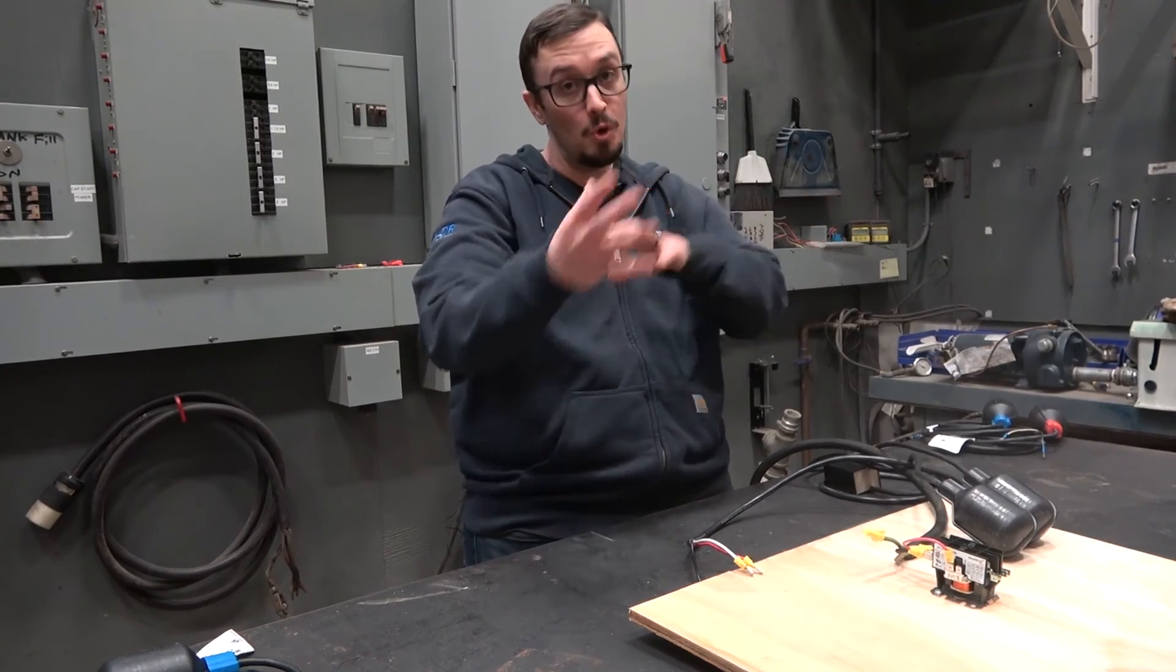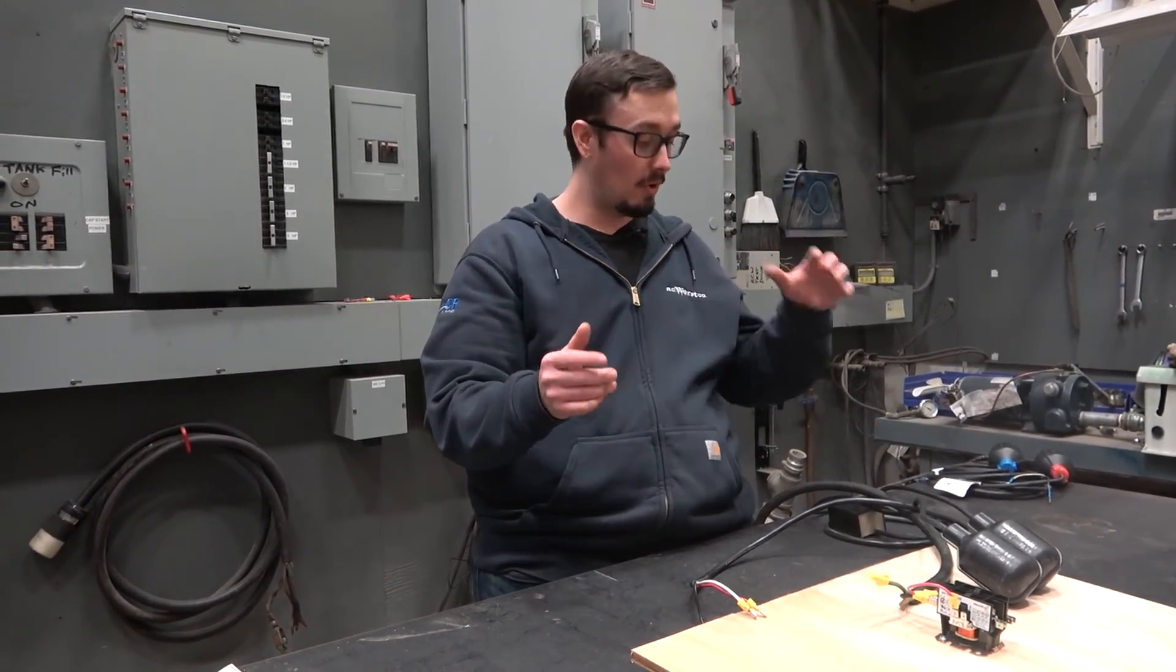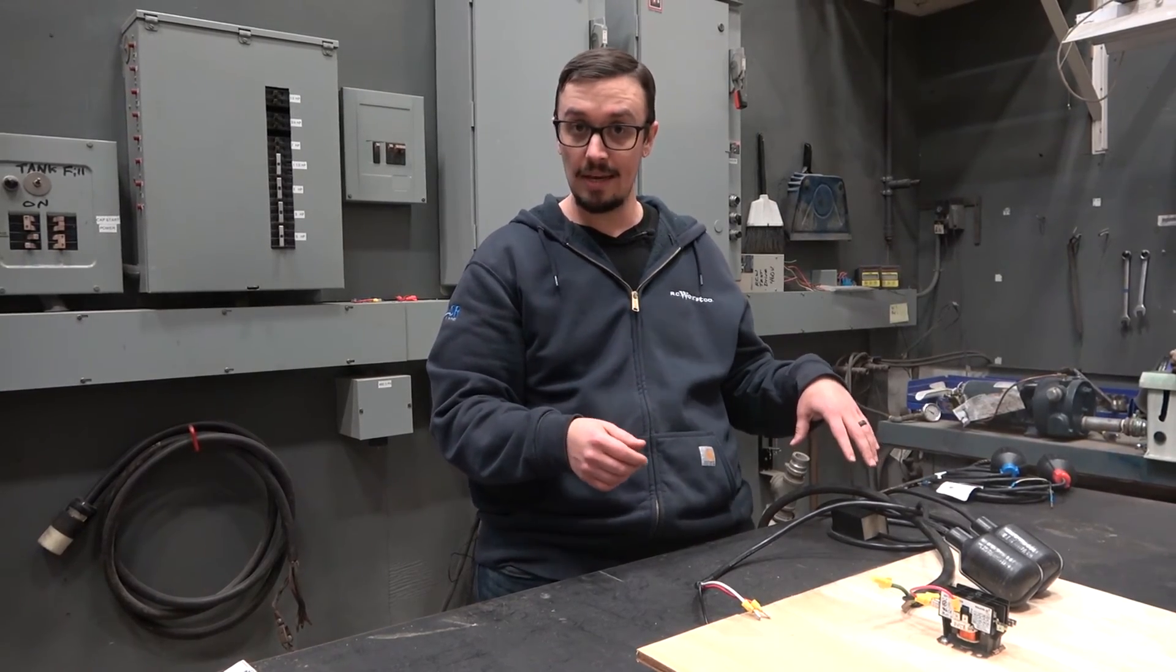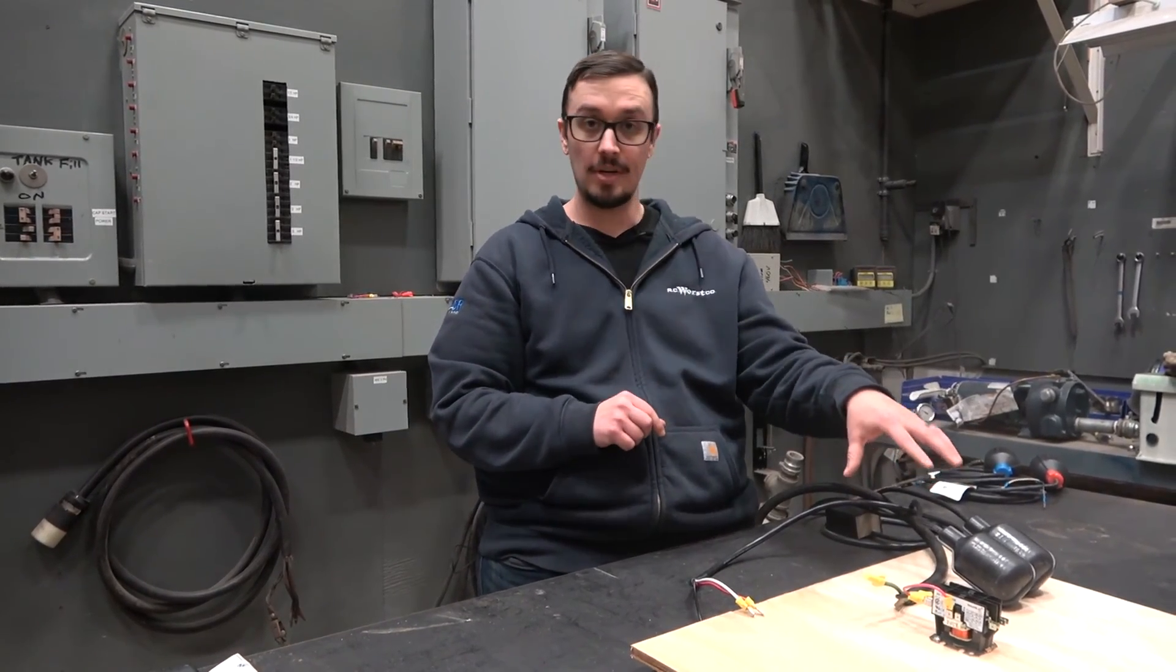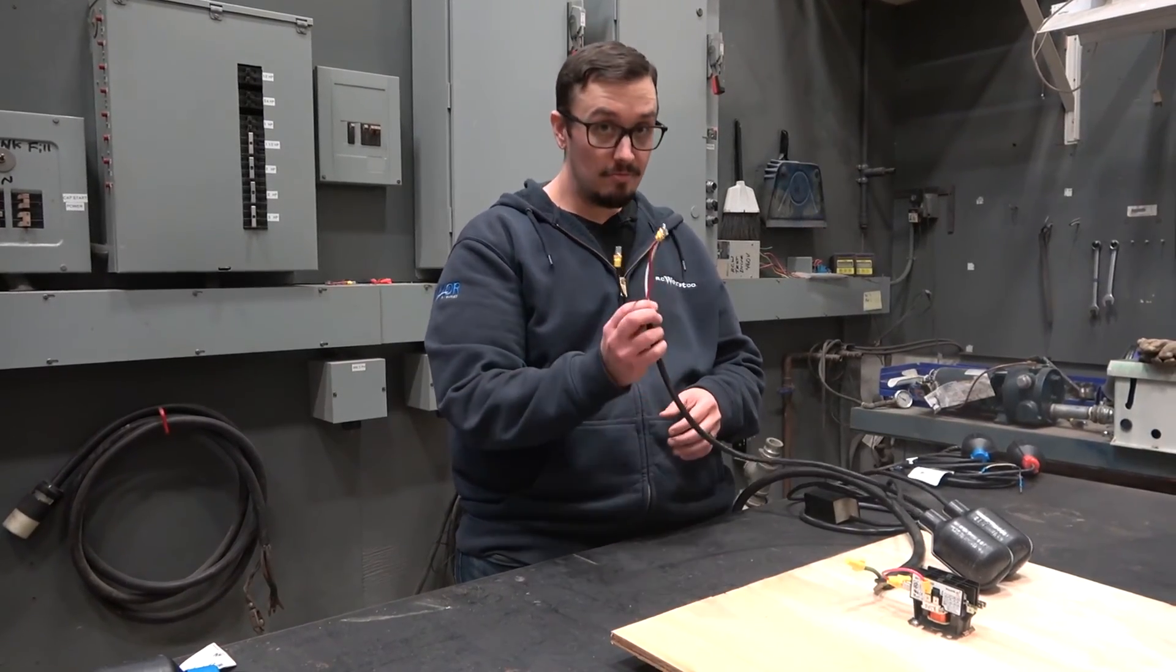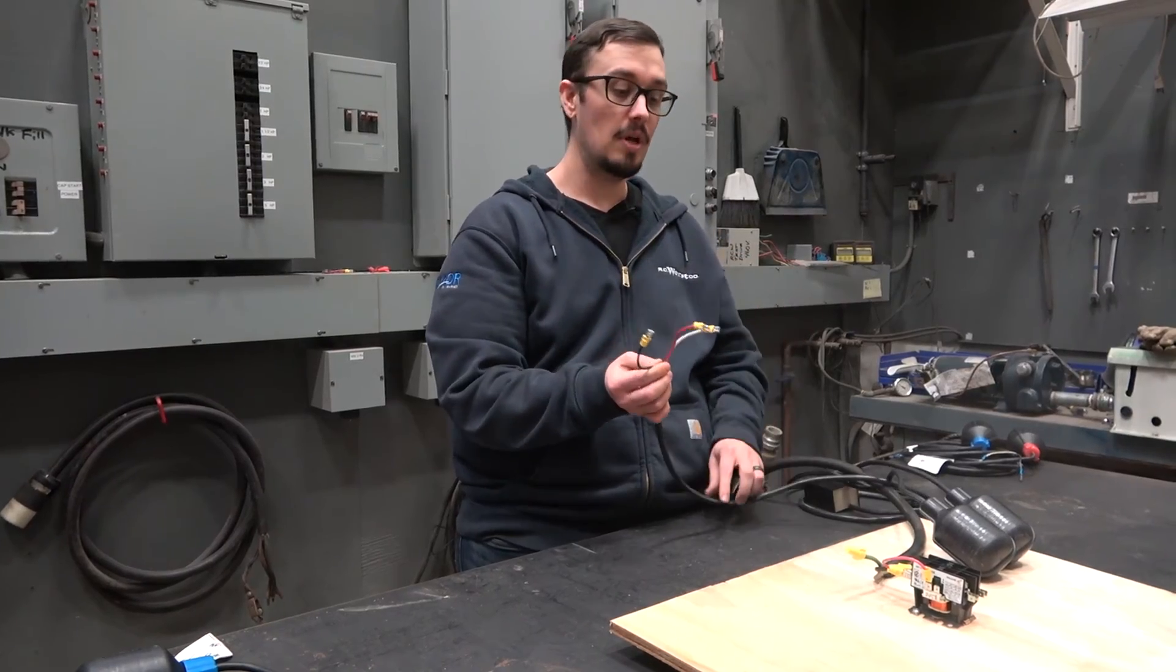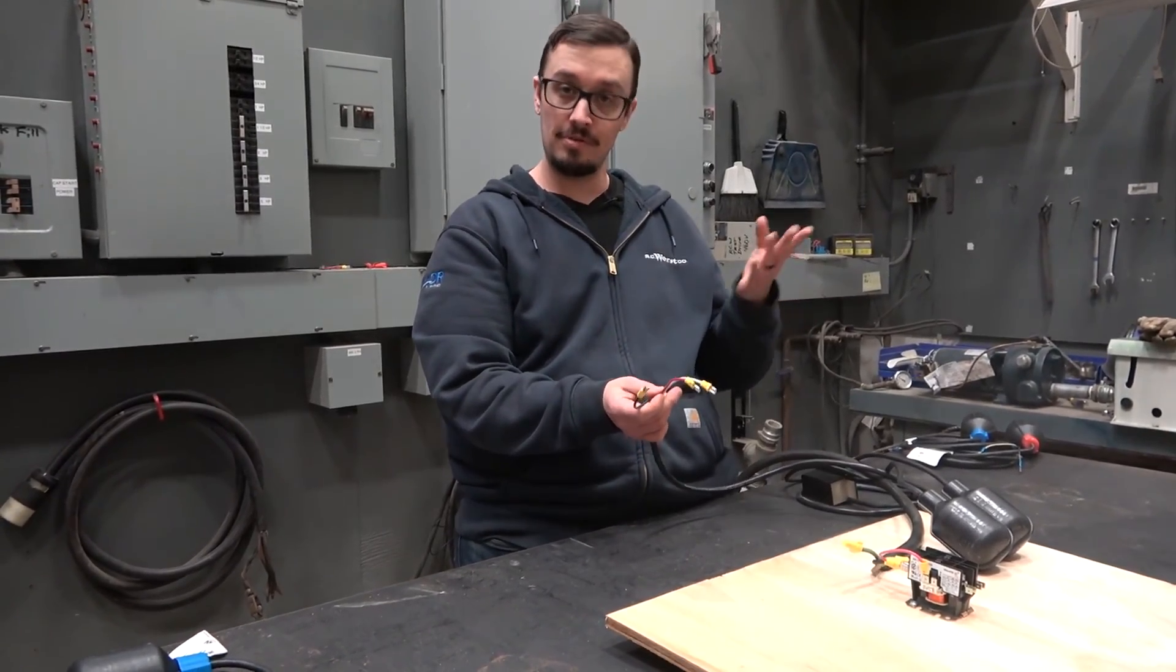We're doing a single float setup as well as two floats, not to be confused with a double float, whereas the double float has a built-in relay that creates a holding circuit within the action of the floats itself, which is why double float switches have three wires instead of your typical two. So the wiring on this one's a little different.